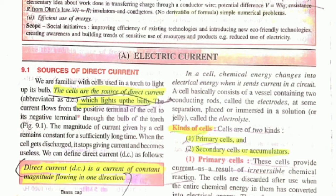This is important: in a cell, chemical energy changes into electrical energy when it sends current in a circuit. Always remember, chemical energy changes into electrical energy.